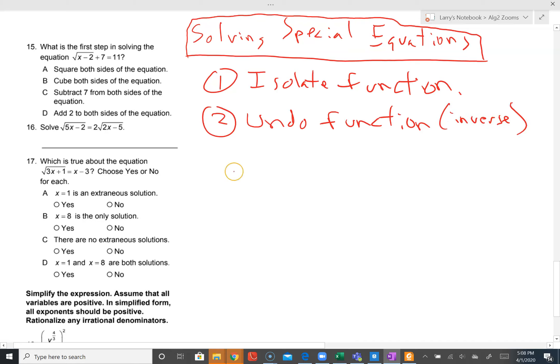In this particular case, number 15, we have the square root of x minus two plus seven equals eleven. Isolate the function. Here the function is the square root. Circle the function. Treat this like you're solving for red circle. If I were solving for red circle, the first thing I would do is subtract seven on both sides. That's the first step.